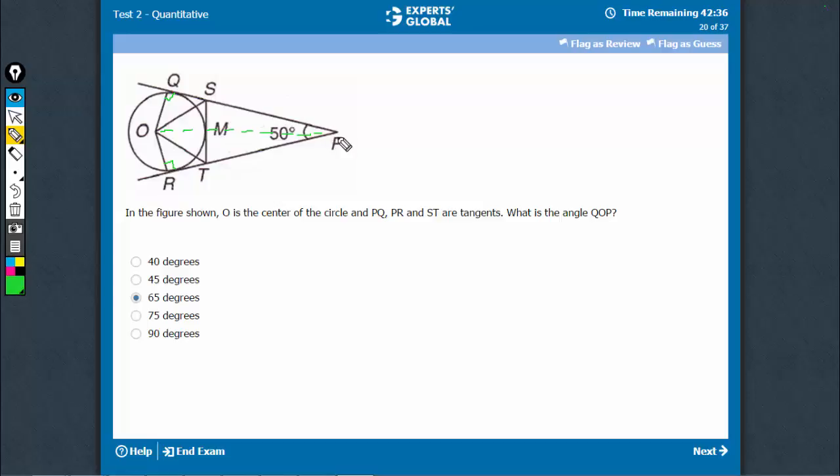Now see, two tangents on the same point are equal. So, PQ is equal to PR.